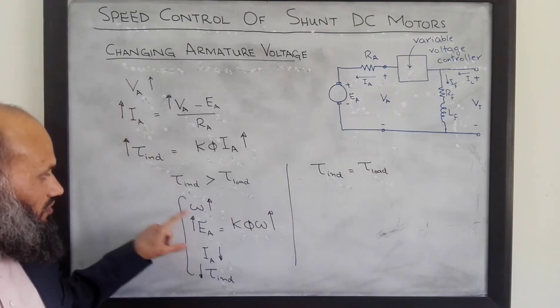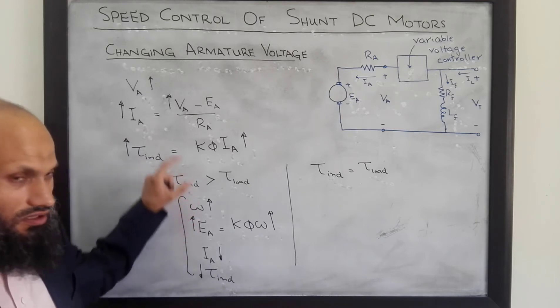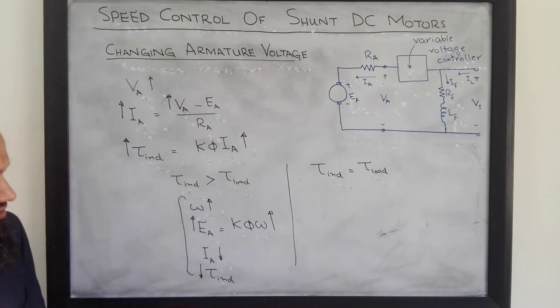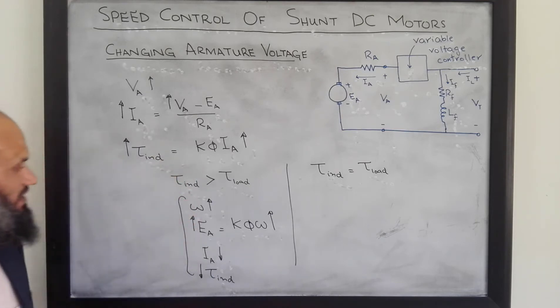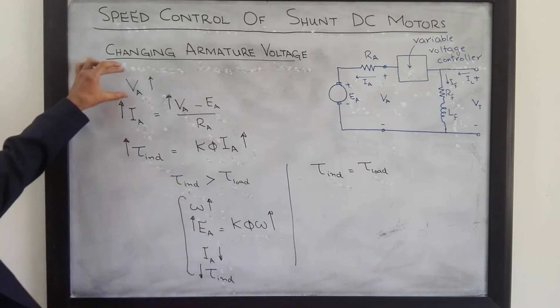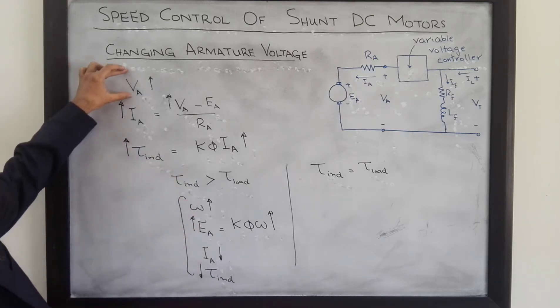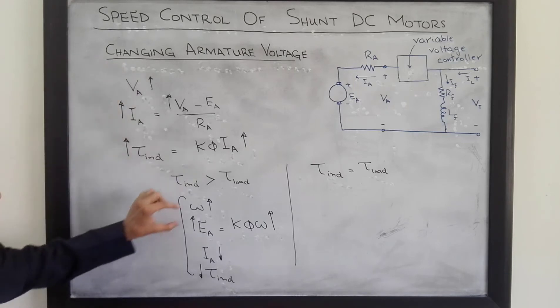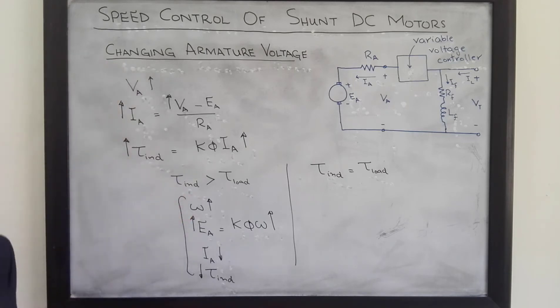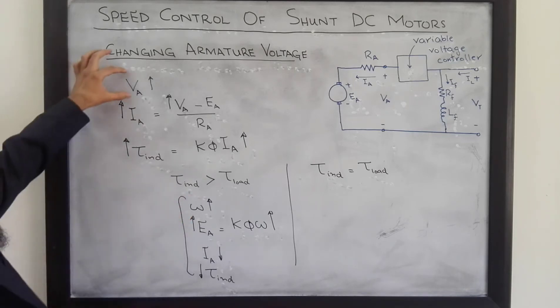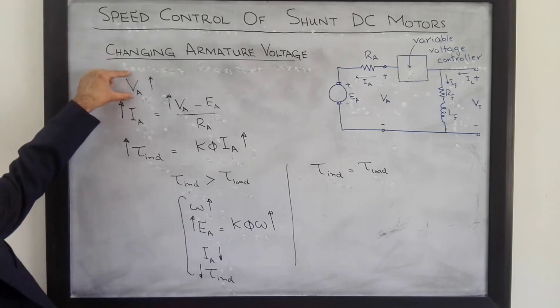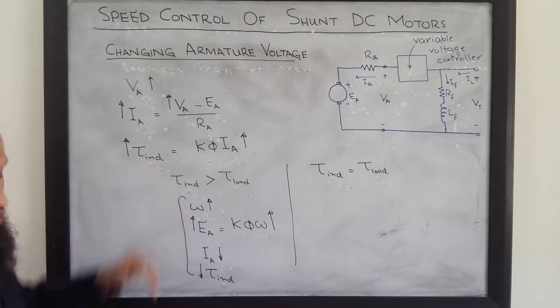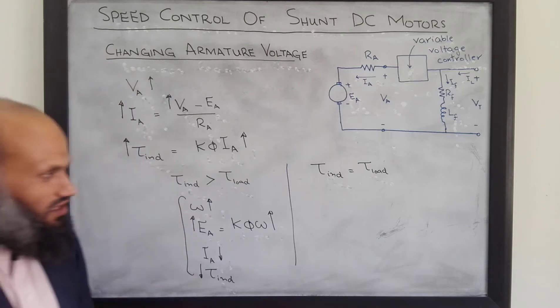This new steady-state velocity will be a larger velocity. That is, by increasing the armature voltage, the speed of the motor increases, and by decreasing this voltage, the speed decreases.